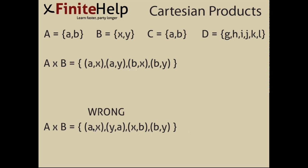Here's an example of what would be wrong. (a,x), that's correct. But then if you look, I have (y,a), that's incorrect because that's putting an element from B before the element from A. And again I did the same thing here with (x,b). So avoid that.